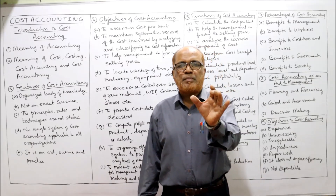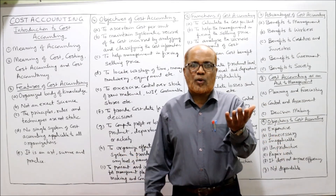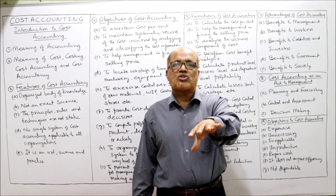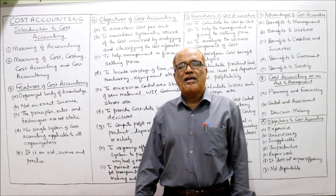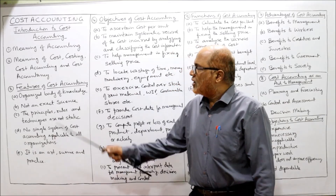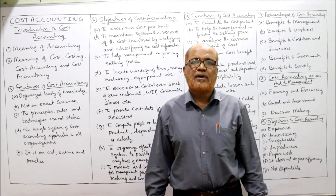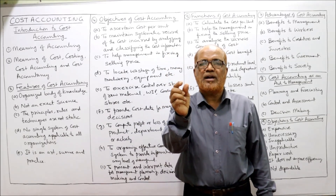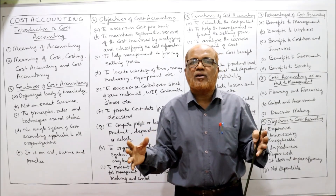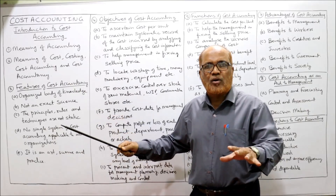Now the meaning of 'cost': cost means the expenditure incurred to produce a good or to provide a service. Costing is the technique of ascertaining the cost of production. Cost accounting is the process and technique of recording cost and ascertaining the cost of production. Cost accountancy is a wider concept which includes costing as well as cost accounting — it covers ascertainment, classifying, analyzing cost, and preparing different cost reports for management.